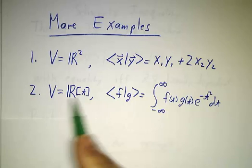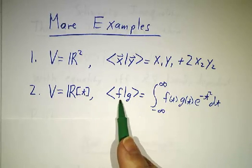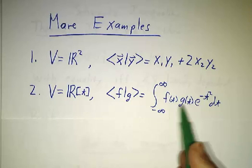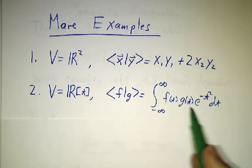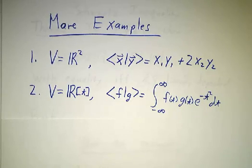If you want to take a space of functions instead of multiplying f times g and integrating it, you can multiply f times g, multiply that by e to the minus t squared and then integrate that.